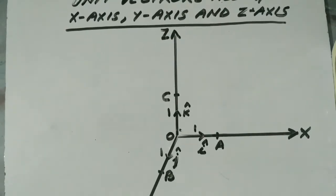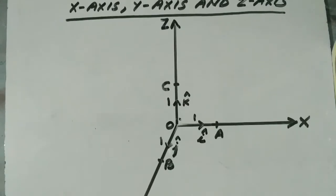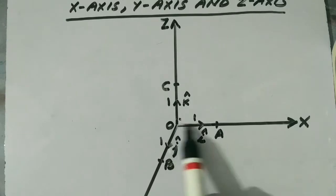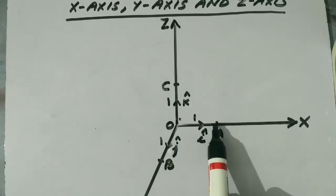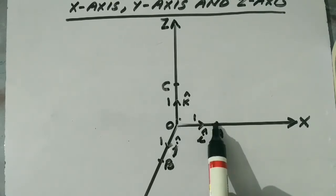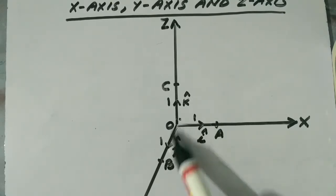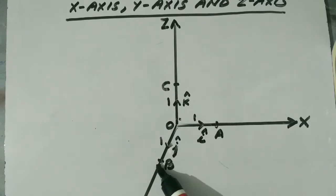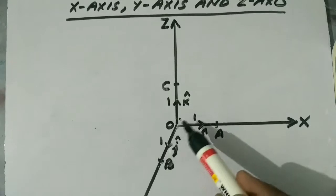A vector whose length is one unit along x-axis is called a unit vector along x-axis. As here in this diagram, OA is a unit vector — its length is one unit. Similarly, along y-axis, OB is the vector whose length is one unit, so this is the unit vector along y-axis.